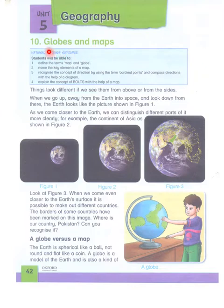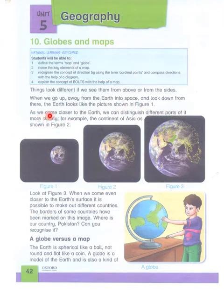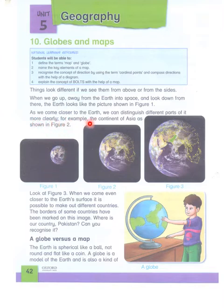Today we will talk about globes and maps. Things look different if we see them from above or from the sides. When we go up away from the earth into space and look down from there, the earth looks like the picture shown in figure one. As we come closer to the earth, we can distinguish different parts of it more clearly — for example, the continent of Asia, as shown in figure two.